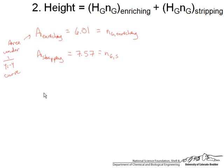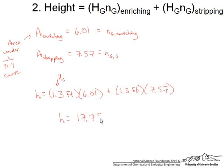Finally we will calculate the overall height. The height equals 1.3 which is our HG that was given to us at the beginning in the problem statement. HG 1.3 feet times 6.01 plus 1.3 feet times 7.57. And so the overall height equals 17.7 feet. That is the total height required for this column.